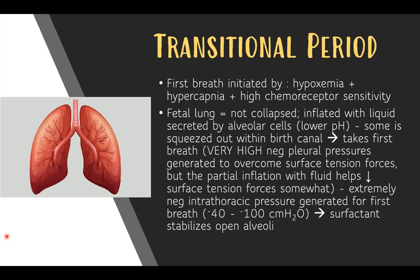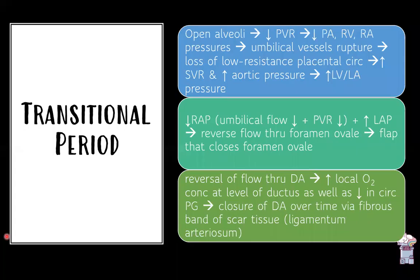Once those alveoli are opened, surfactant stabilizes them, which decreases pulmonary vascular resistance, reducing pressure in the pulmonary artery, right ventricle, and right atrium. Once the umbilical vessels rupture, the low-resistance placental circuit is lost, increasing systemic vascular resistance, aortic pressure, and left ventricular and left atrial pressure.